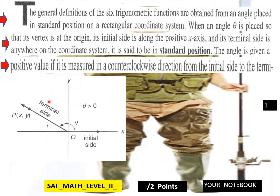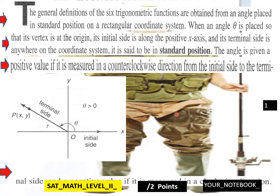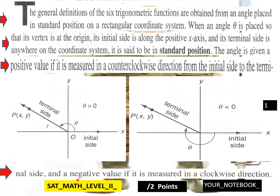The angle is given by a positive value. Here is an example — here's theta, here's a terminal side. If it is measured in a counterclockwise direction, that's positive. This direction would be negative from the initial side to the terminal side. In a clockwise direction it's negative, so this would be a negative theta, and this would be a positive theta.